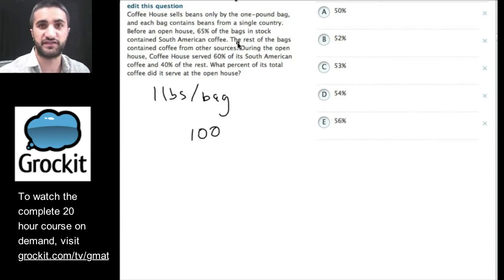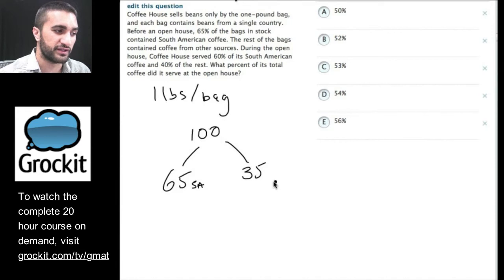Before an open house, 65% of the bags in stock. So, let's say there was 100 bags in stock, and 65% of them contained South American beans. The rest of the bags contained beans from other sources. So, I'm already doing some basic arithmetic, and really working the question like an information management challenge. So, 35 other. During the open house, Coffee House served 60% of its South American coffee. So, 60% of this amount. So, how do we figure that out quickly?